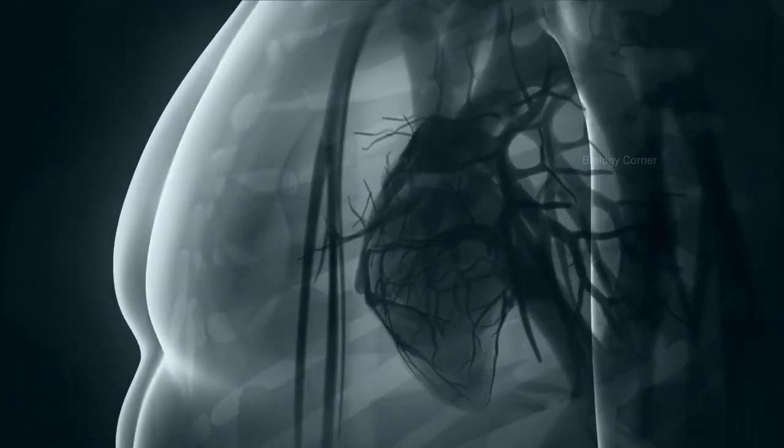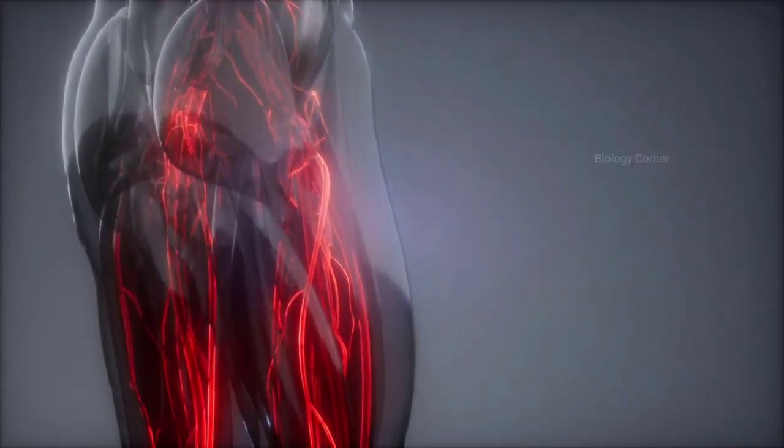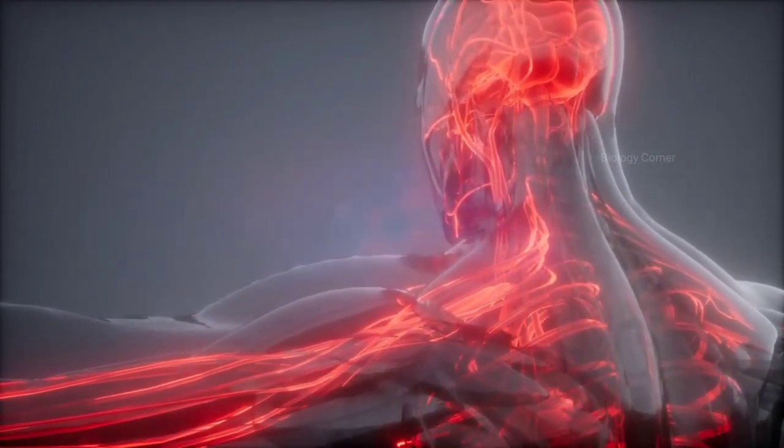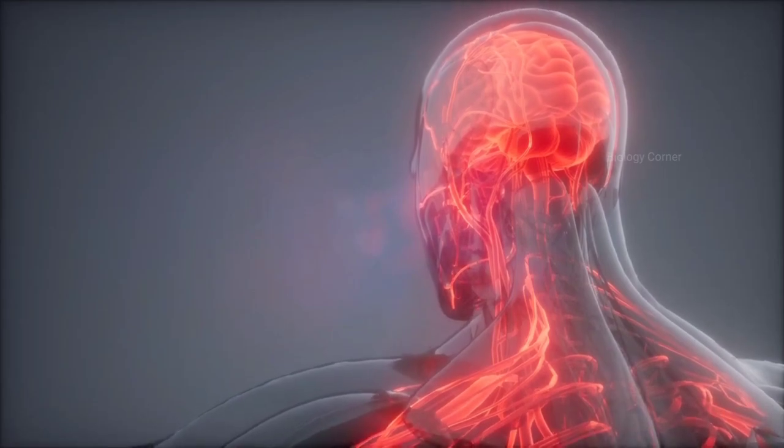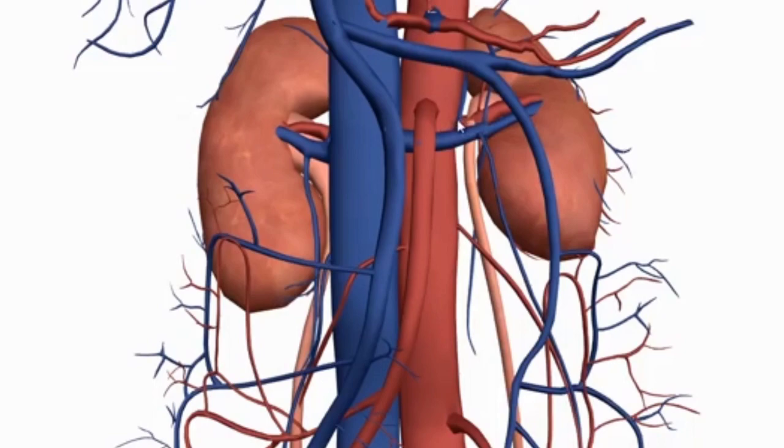Our heart pumps this oxygenated blood throughout the body and this blood reaches everywhere in our body with the help of different arteries, such as the carotid artery supplying blood to our brain, the coronary artery to the heart, and renal arteries to the kidneys.